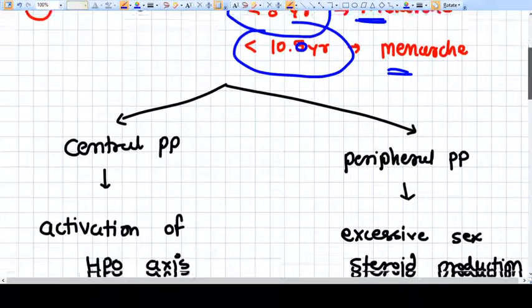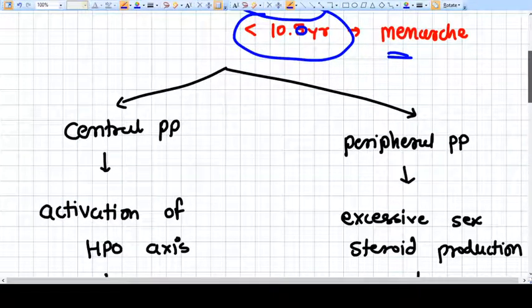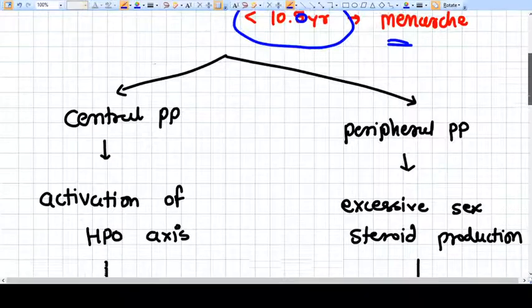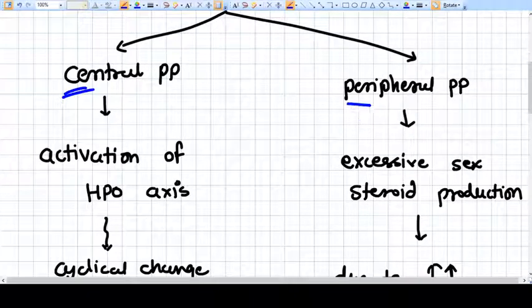It is called precocious puberty. Now it is basically two types of precocious puberty: the first is central and the second is peripheral. Why we are learning this? Because we want to know the reason, so we are dividing this kind of precocious puberty.